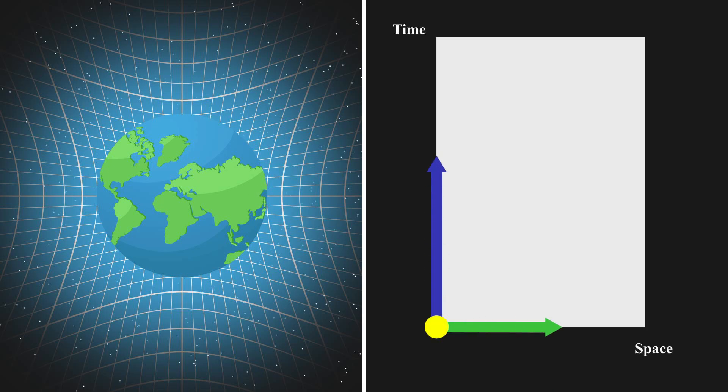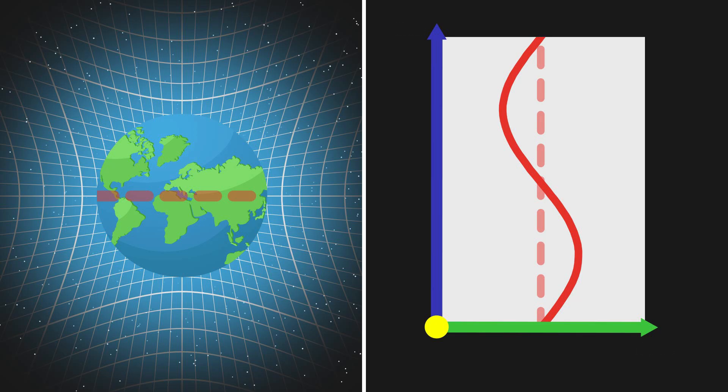If you were to flatten the spacetime surface, the equator would appear as a straight line through time, while the ecliptic would wobble back and forth around this timeline. What does this mean? It shows that the object you nudged moved to the right until the curved spacetime structure slowed it down.